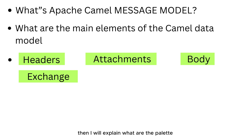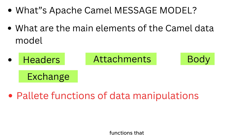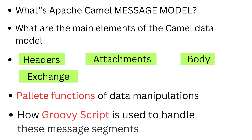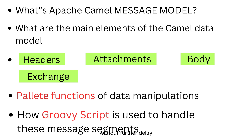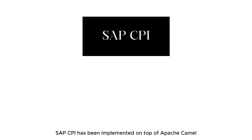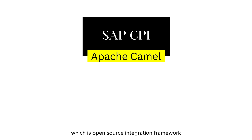Then I will explain what palette functions you can use in SAP CPI to handle these message segments, and finally I'll explain how these messages can be handled using a simple Groovy script. Without further delay, let's get started. As you all know, SAP CPI has been implemented on top of Apache Camel, which is an open source integration framework.